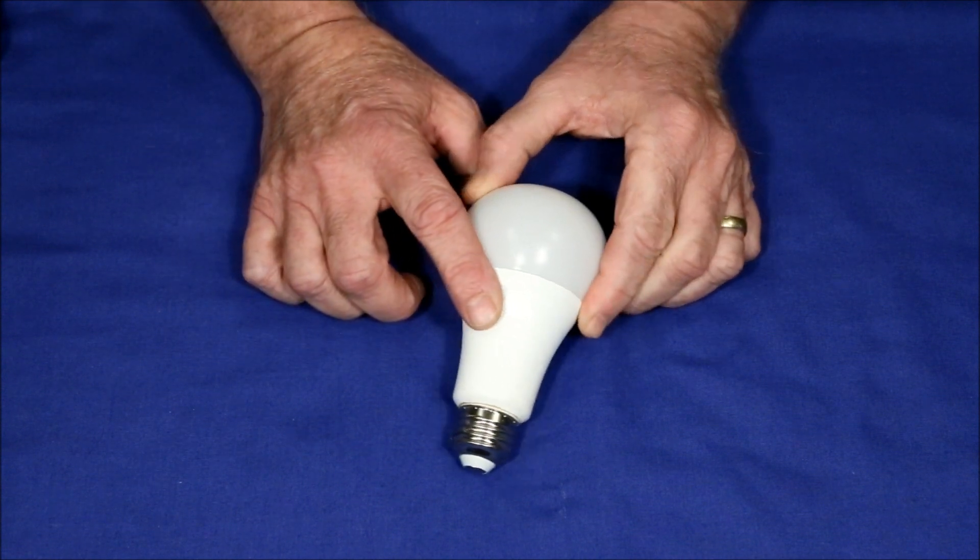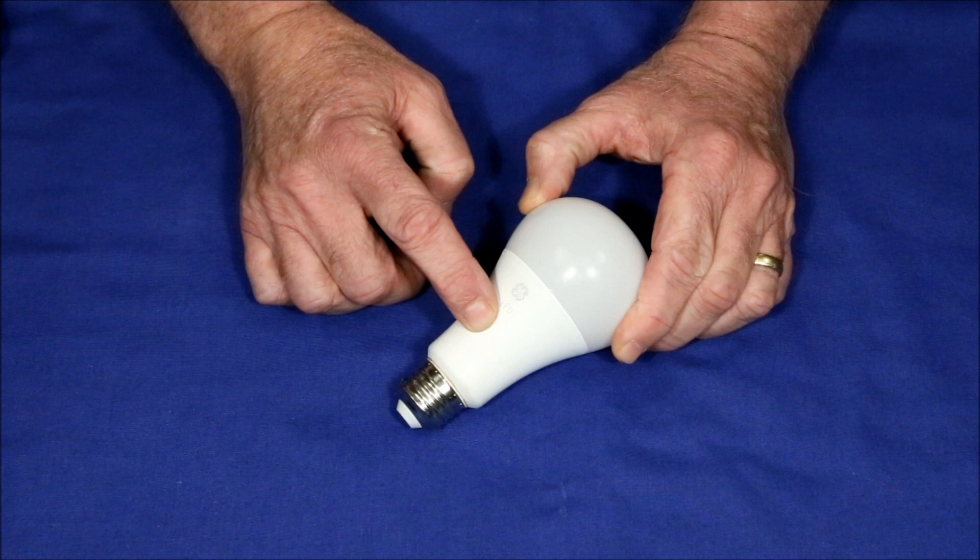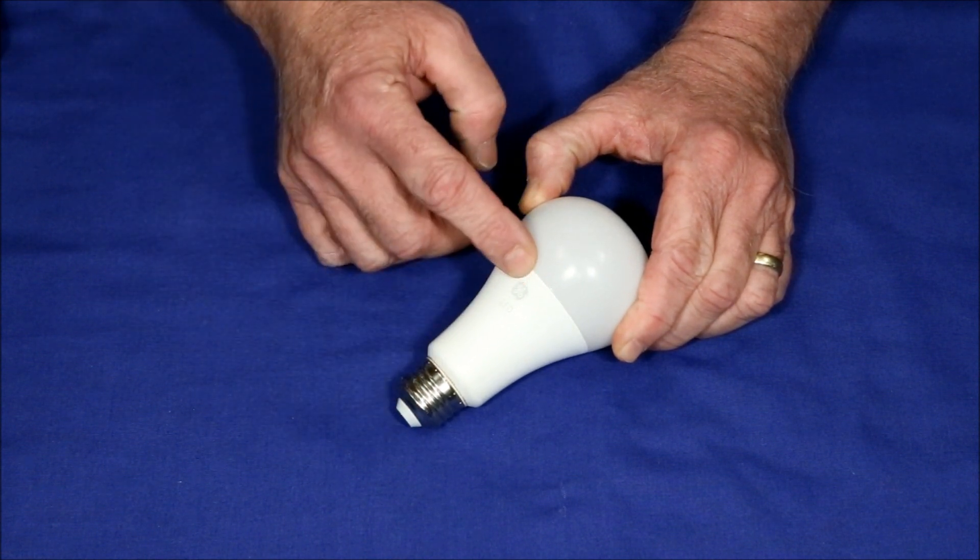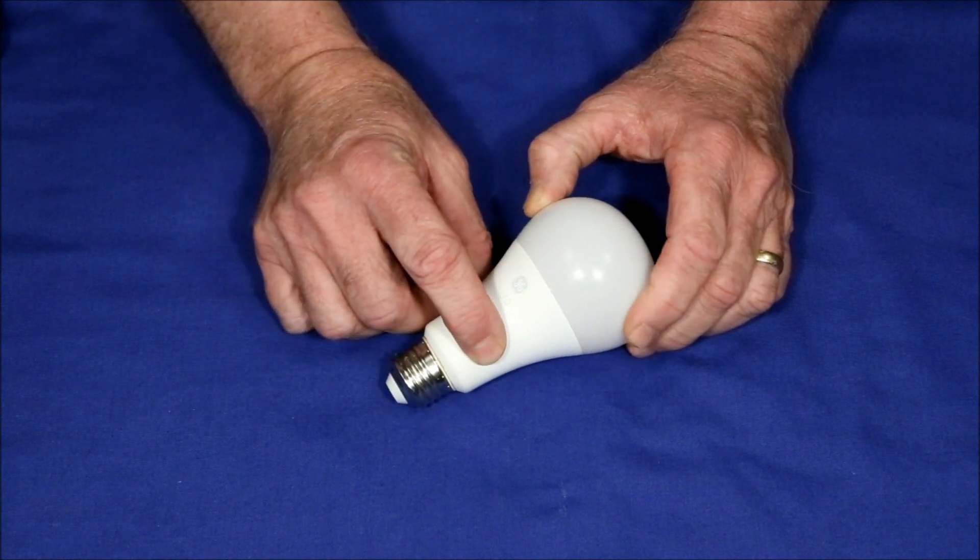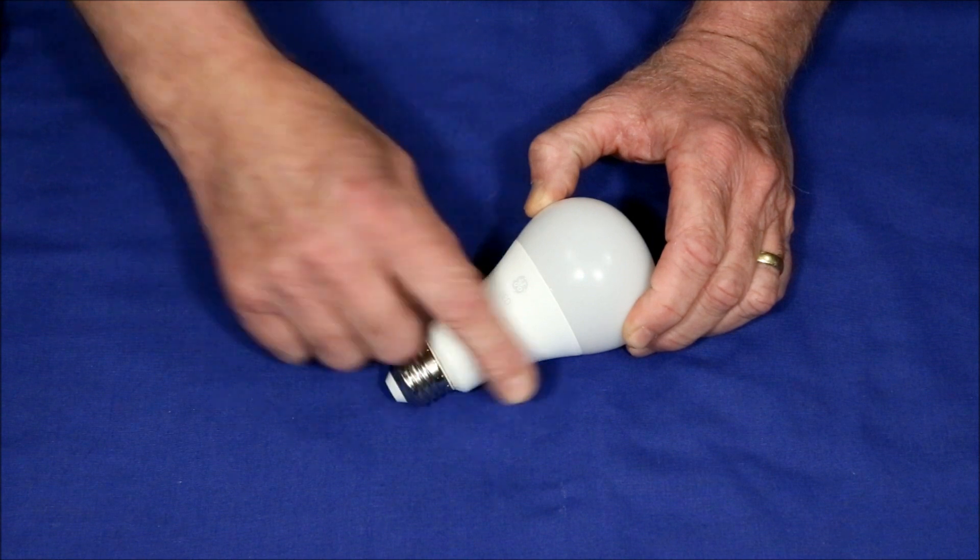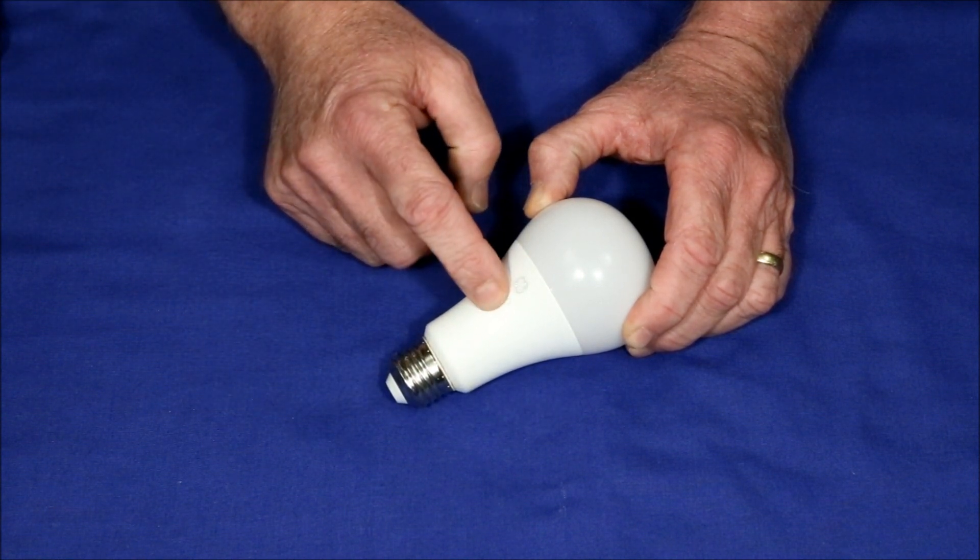As good as these bulbs are there's still a couple of areas that could be improved. The base holds circuitry which converts the line house current into something the LEDs inside can use. These aren't perfectly efficient and if you light one of these for a few minutes and you hold this base you can feel it gets quite warm. That heat is loss of efficiency.